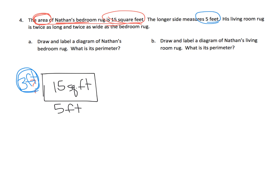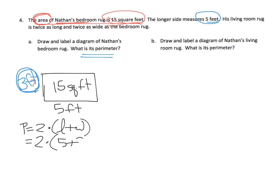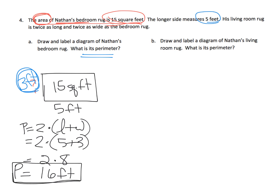What's the perimeter? The perimeter of his rug is going to be two times length plus width, which is two times five plus three, which is two times eight, which is sixteen. So the perimeter is sixteen feet. If we wanted to walk all the way around that rug, we would have to walk sixteen feet.